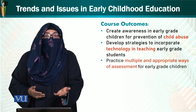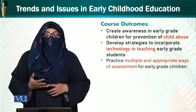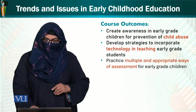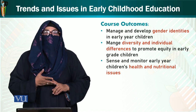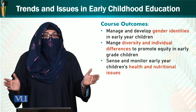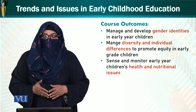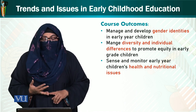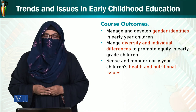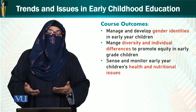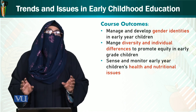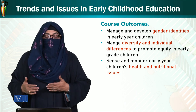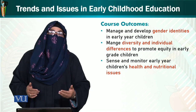The next learning outcome is to practice multiple and appropriate ways of assessment for early grade children. We have more learning outcomes because this is a vast and very essential course. You will learn to manage and develop gender identities in early year children, manage diversity and individual differences to promote equity, and assess and monitor early year children's health and nutritional issues.